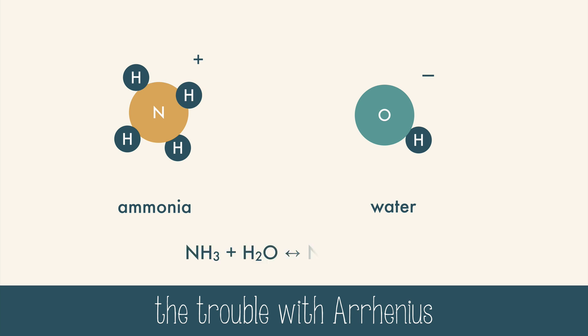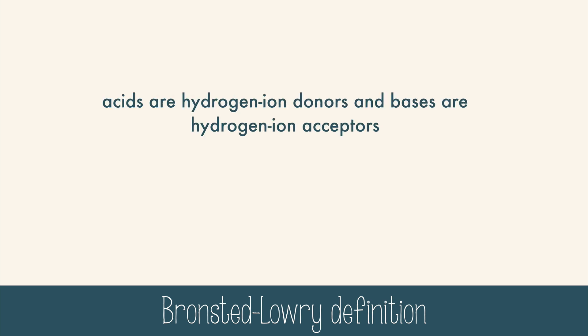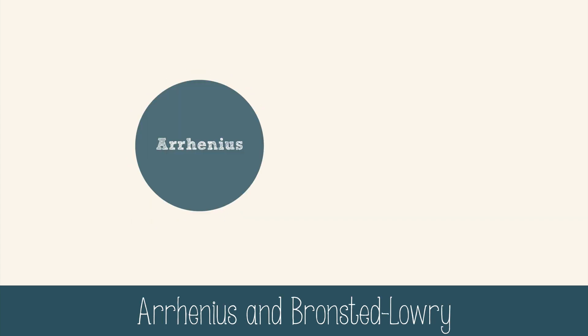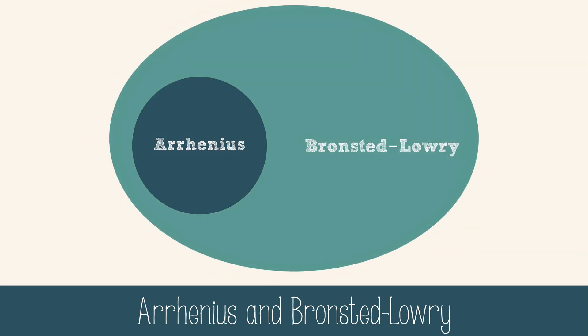So there is another way to define acids and bases. The Bronsted-Lowry definition is that acids are hydrogen ion donors and bases are hydrogen ion acceptors. It's a broader definition, so all Arrhenius acids and bases are also Bronsted-Lowry acids and bases, but not all Bronsted-Lowry acids and bases are Arrhenius.